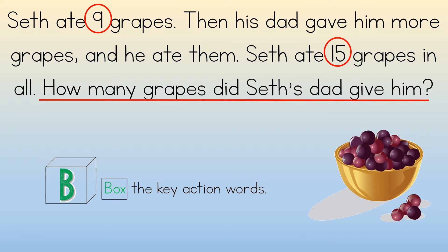Next, box the key action word or words. I could see a few different words being boxed here, but I think the most important one is 'more.' More tells you that you can add to solve this problem. If Seth starts with nine grapes, is then given more, and ends up with 15 grapes, 'more' means you can add to solve this — also by counting on.